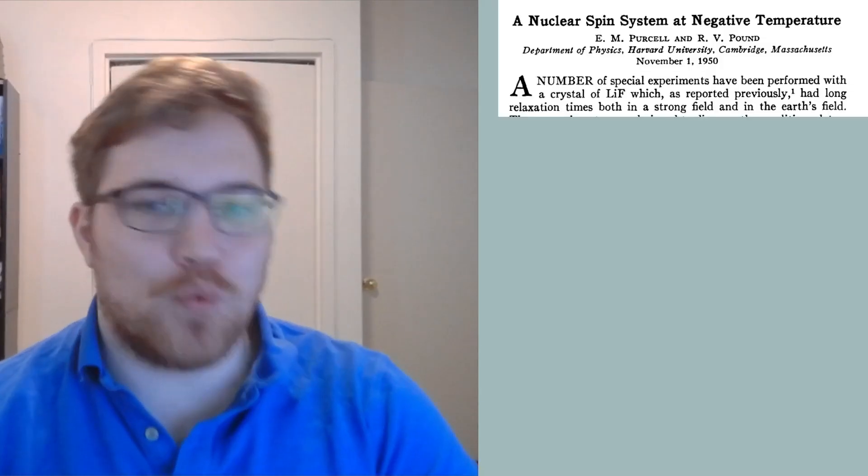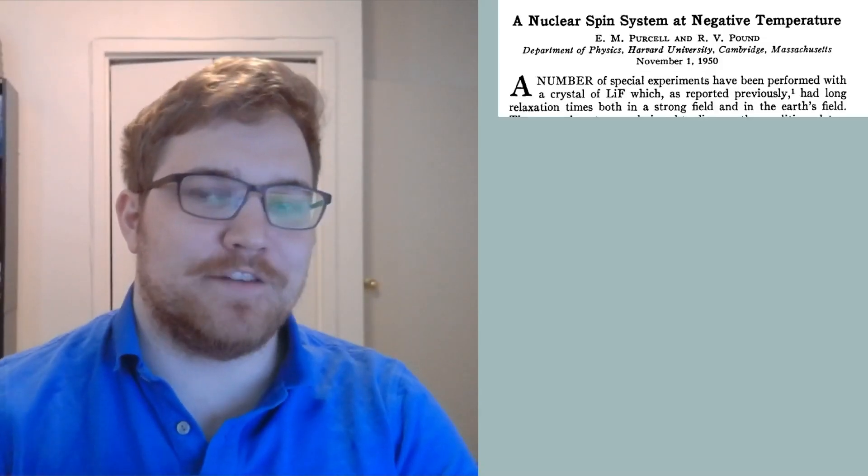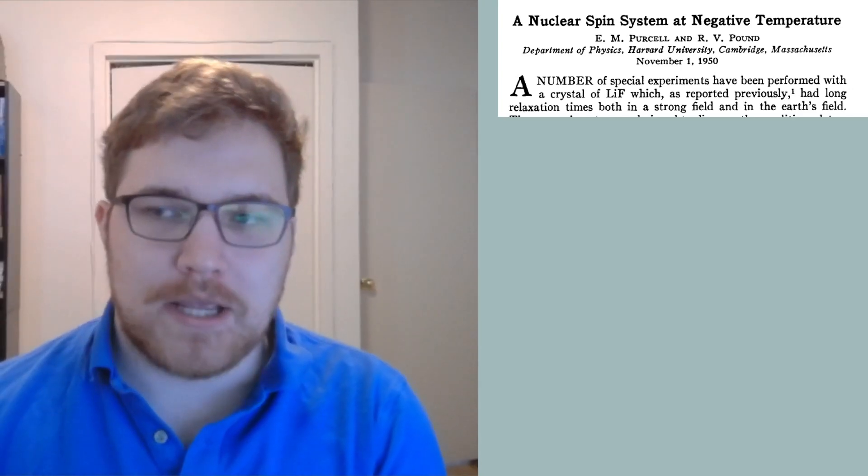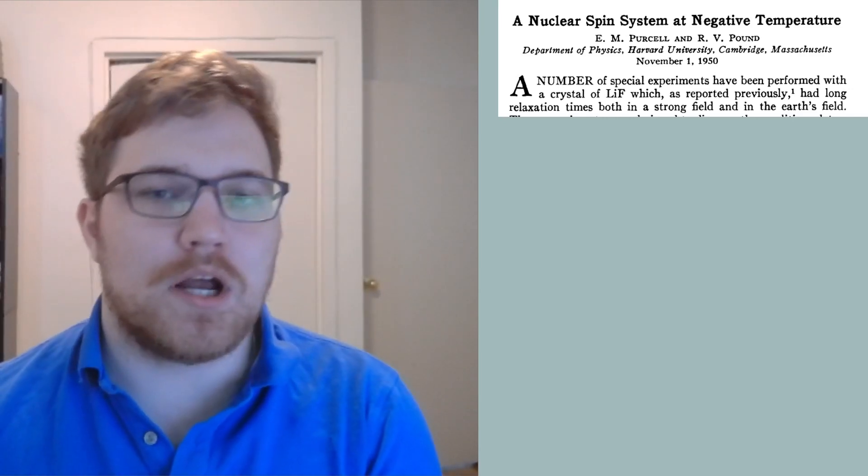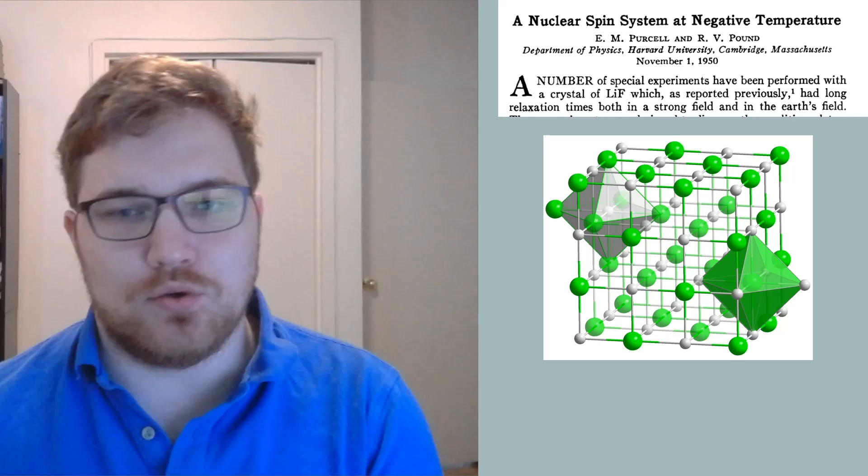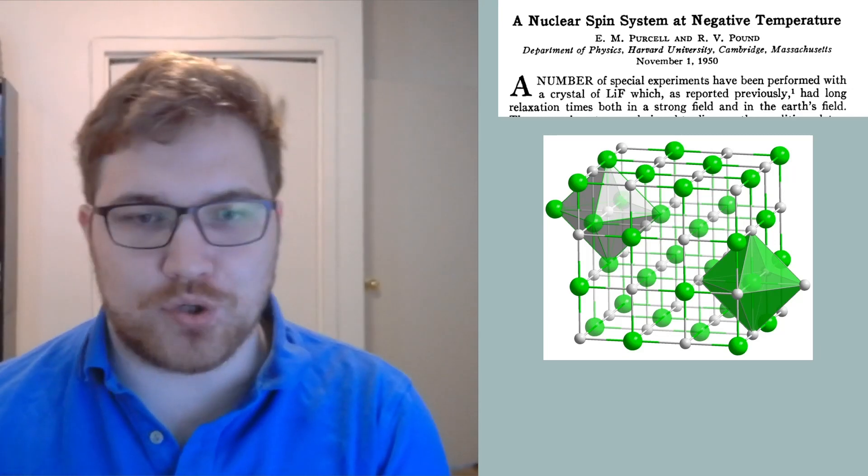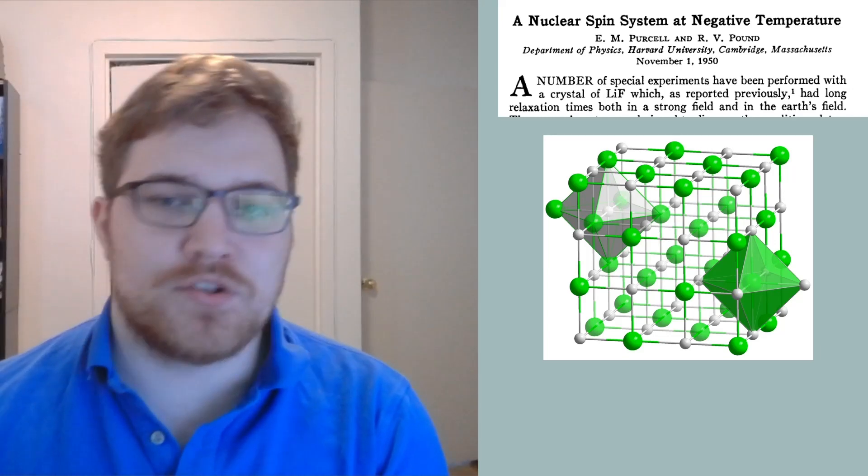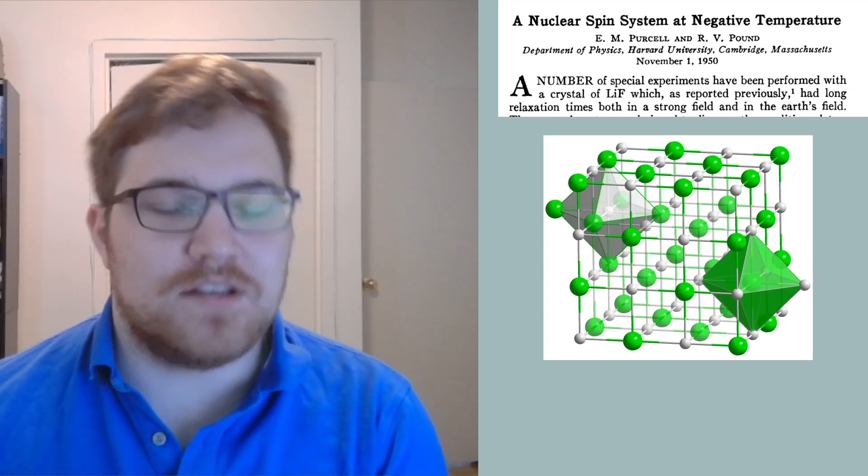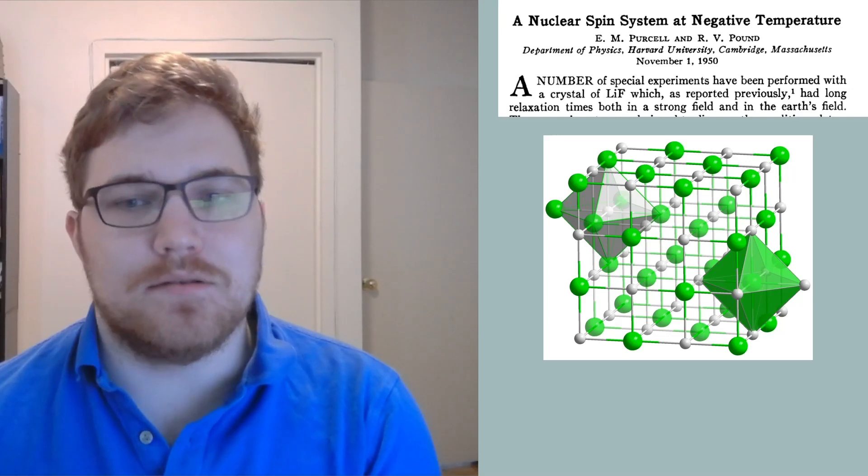The experiment in question is written about in a famous paper entitled A Nuclear Spin System at Negative Temperature. The authors study lithium fluoride, which again is a solid. Solids are organized into a lattice structure, which is pictured here. We can think of the balls on the lattice in this picture as atoms. In our example, the green is fluoride and gray is lithium.